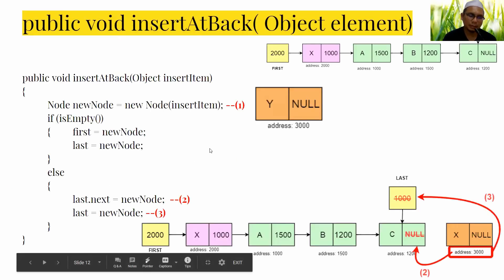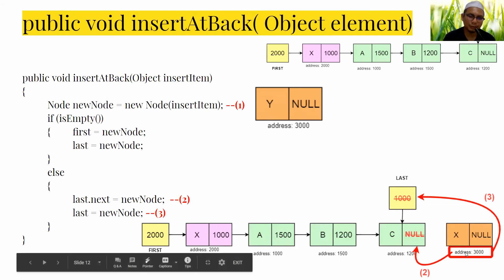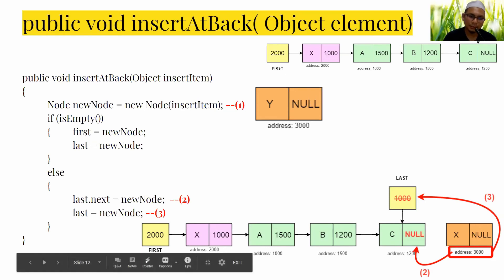To wrap up, there are three steps for insertAtBack: first, create the new node with data Y and an address; second, copy the address of the new node to the previous last node's next pointer in order to link them.